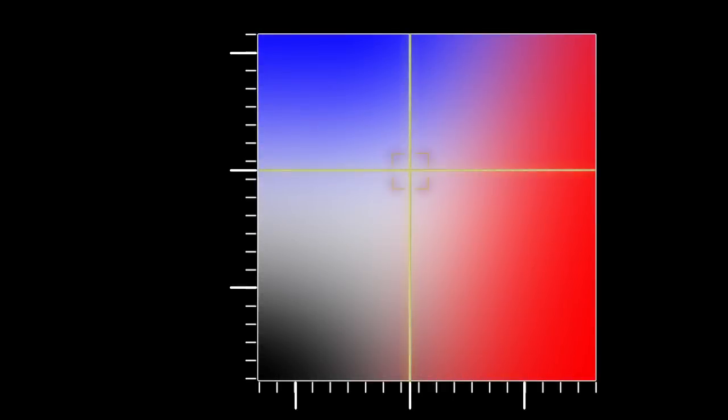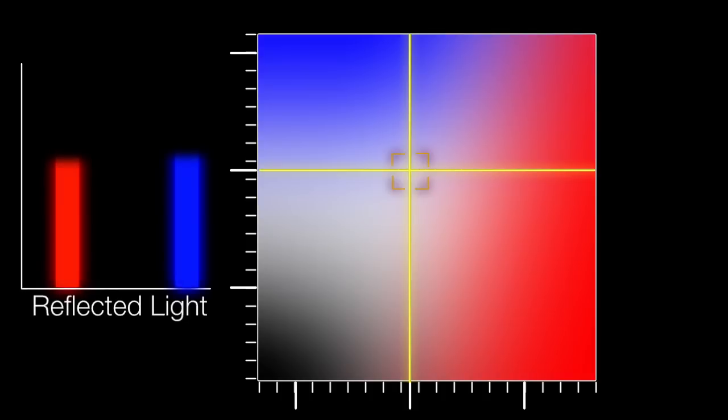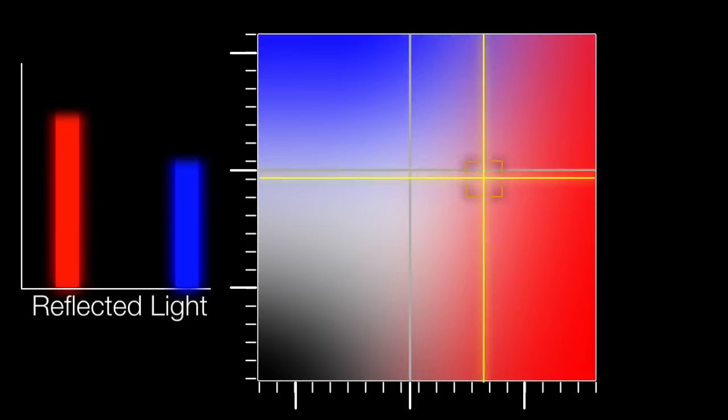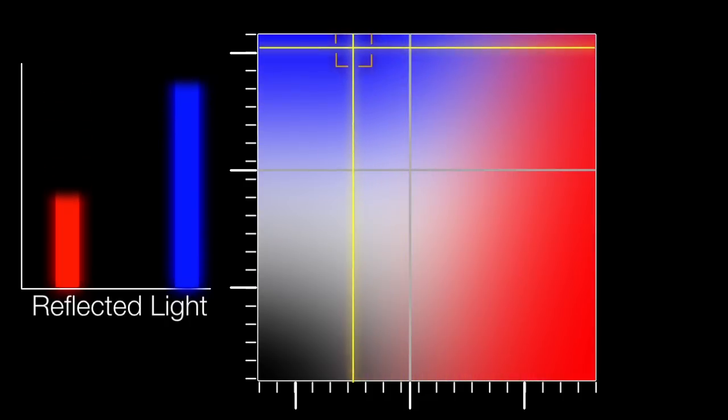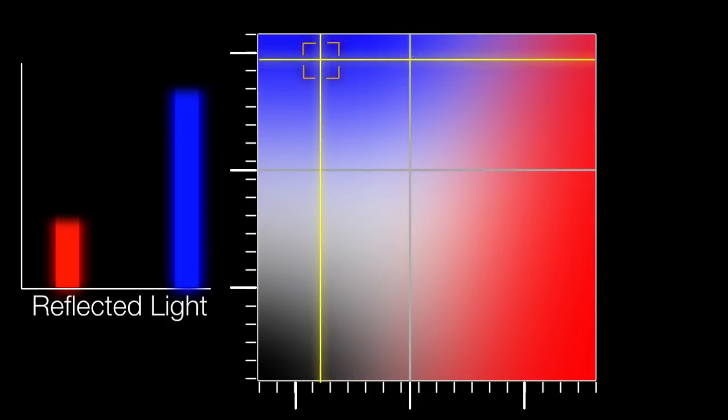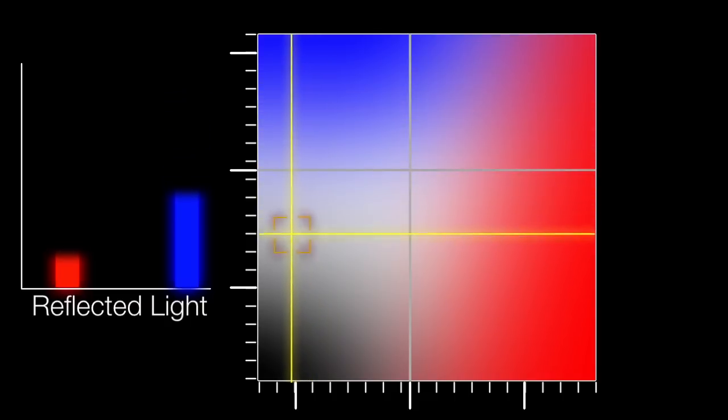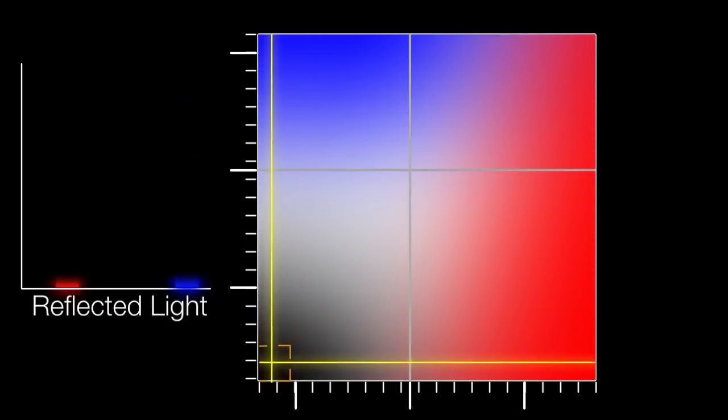These crosshairs mark the spot where a planet would perfectly reflect all the light from the Sun. The more red light a planet reflects, the farther it moves to the right on this chart. The more blue light it reflects, the higher it goes. And if the planet reflects relatively little blue and red light, it falls in the dark section.